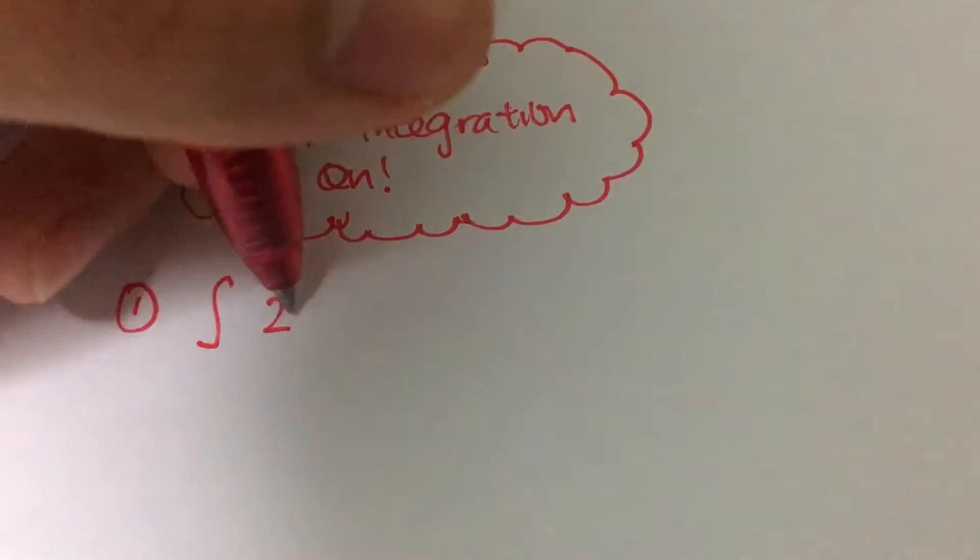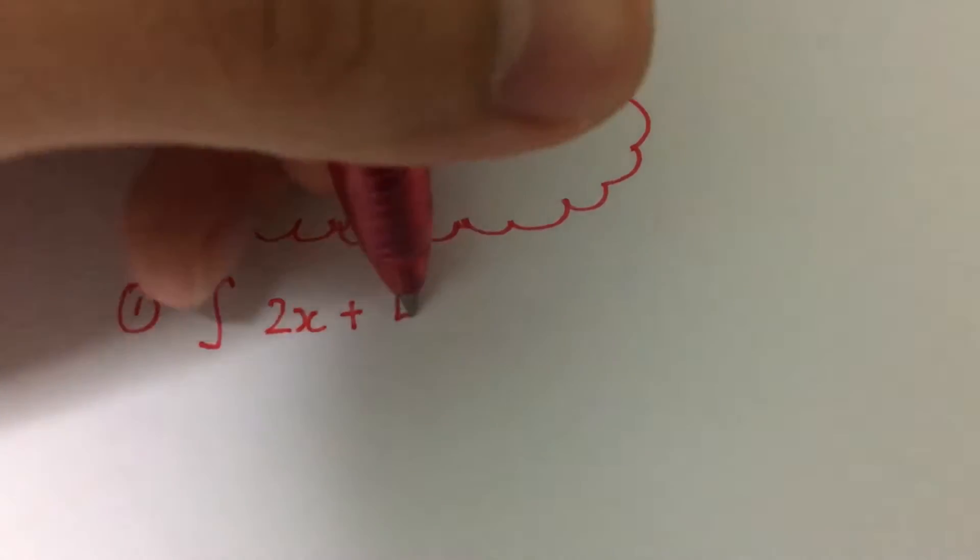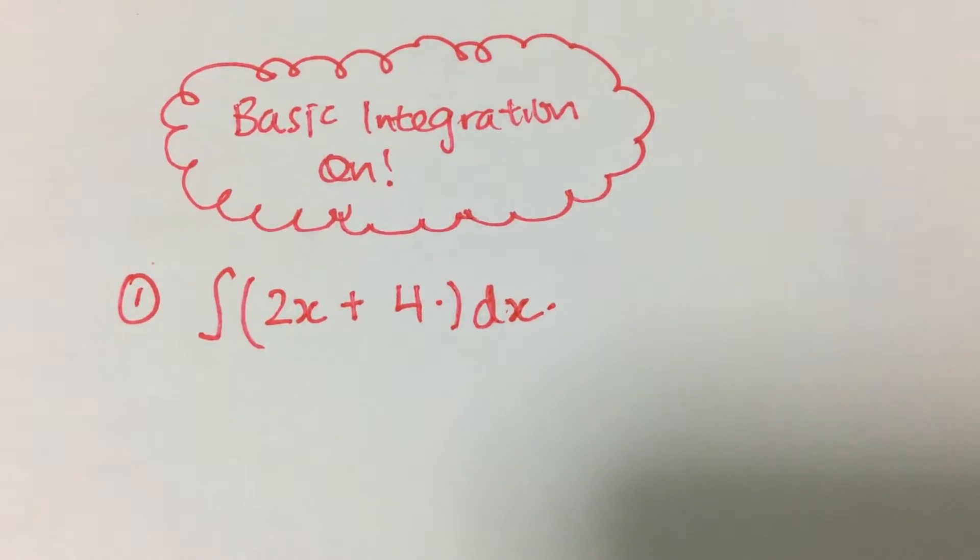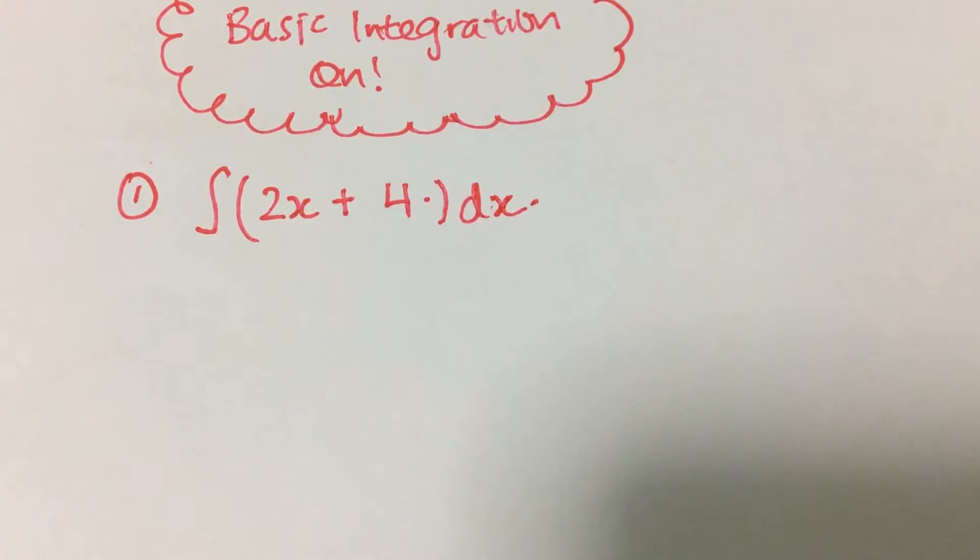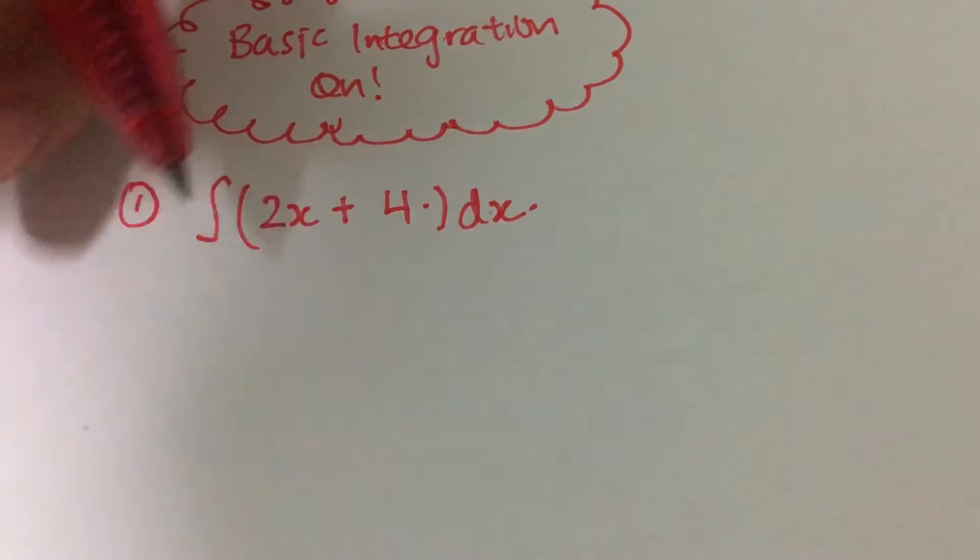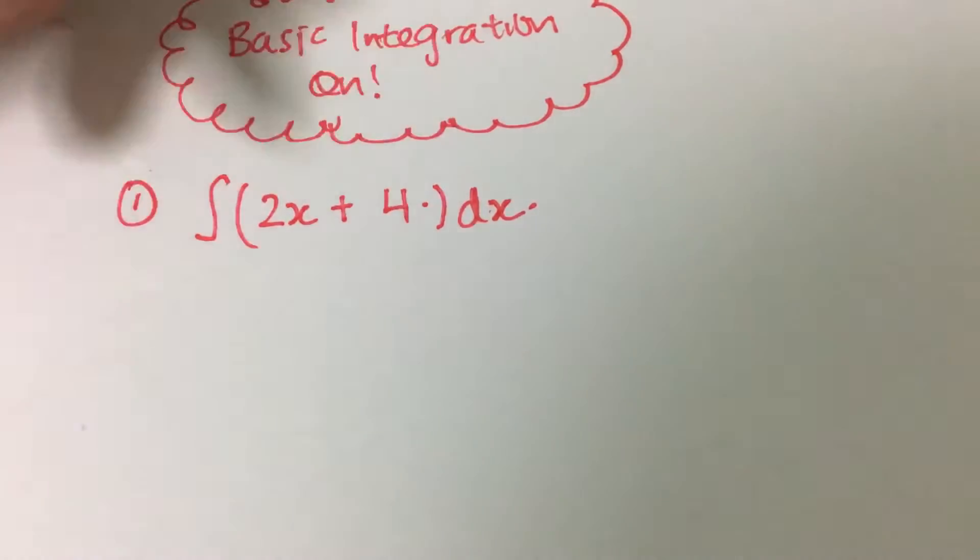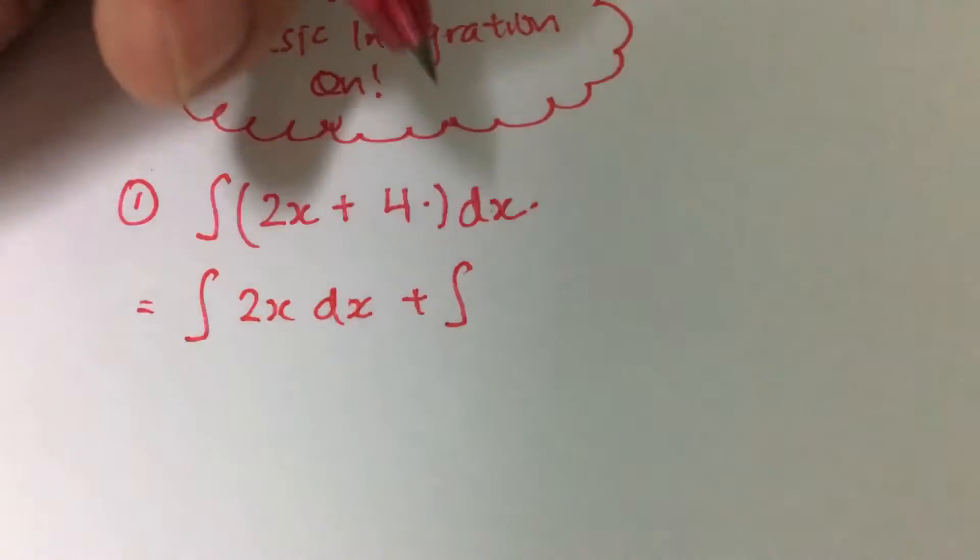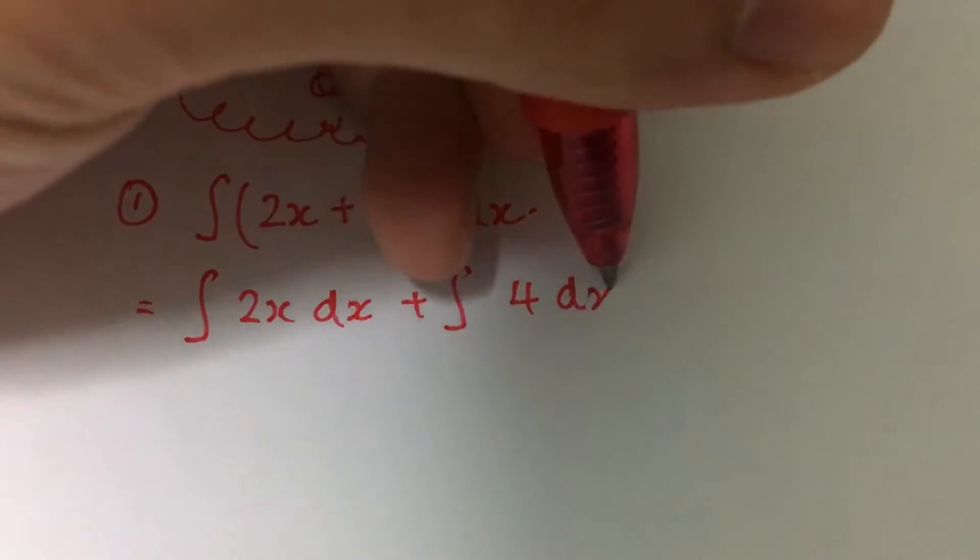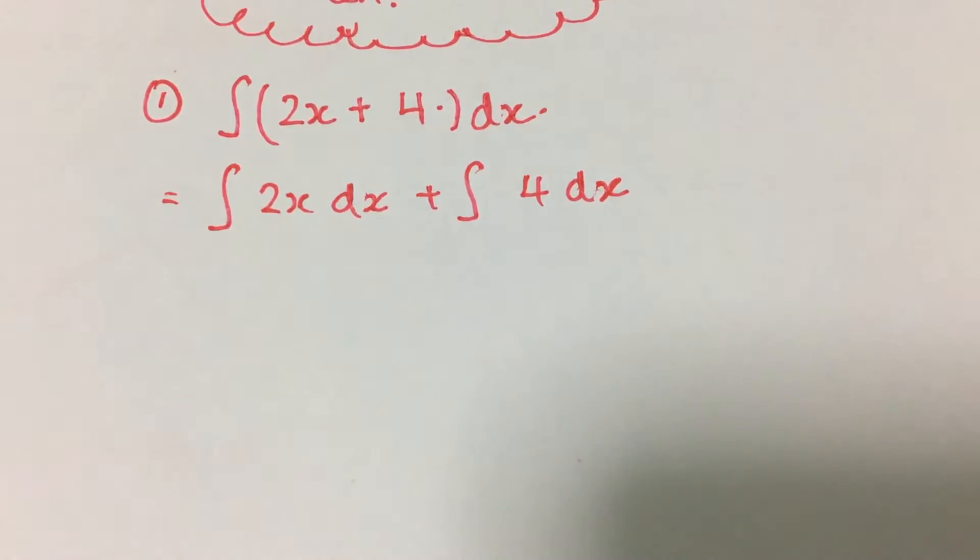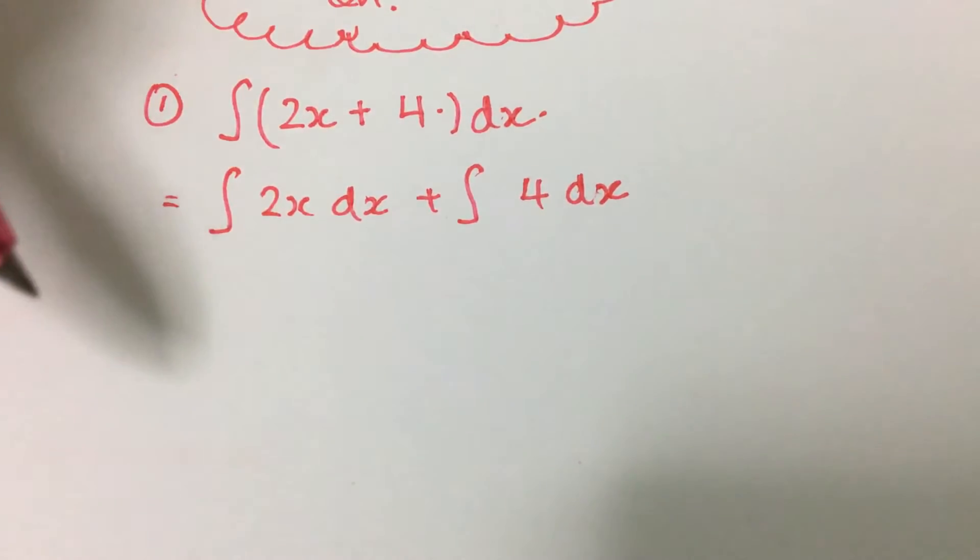For the first question, we have to integrate 2x plus 4 dx. The first thing I would do is actually split this term up into two different terms, so there will be the integration of 2x dx plus integration of 4 dx. Remember that if you use an indefinite integral, you need to add a plus c behind after that, so that's plus a constant for indefinite integrals.